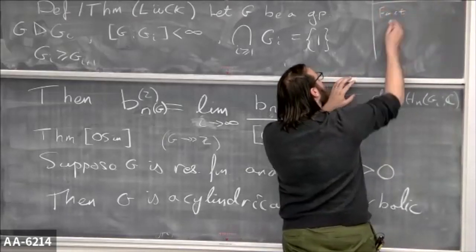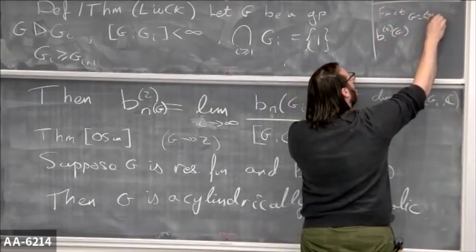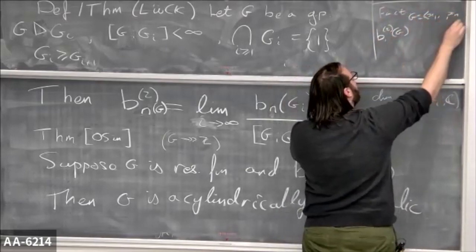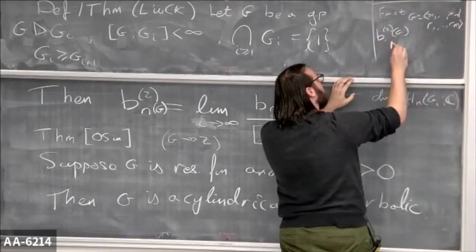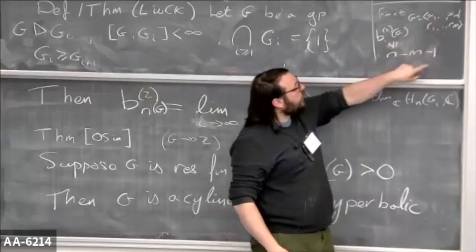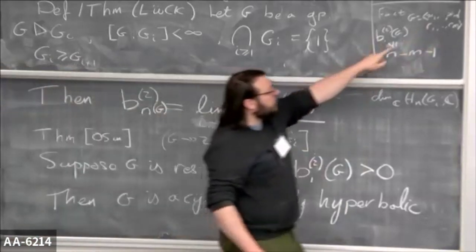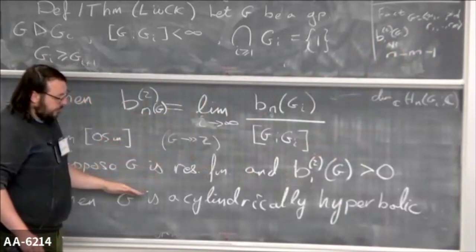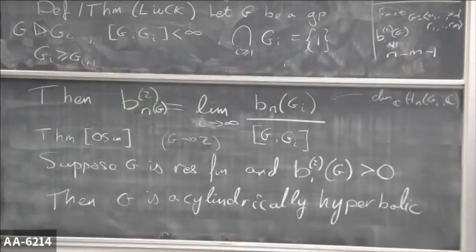As a fact: the first L² Betti number of a group G, given a presentation with generators x₁ through xₙ and relations r₁ through rₘ, is bounded below by n minus m minus one. So if I have two more generators than relations, this is positive. Then I can apply Osin's theorem — and since you always have a map to Z in that case — the group is acylindrically hyperbolic. So non-vanishing gives nice results relating to acylindrical hyperbolicity.